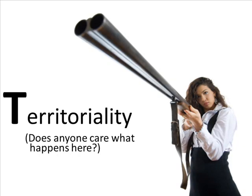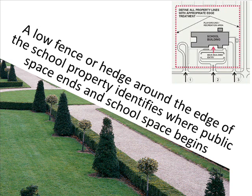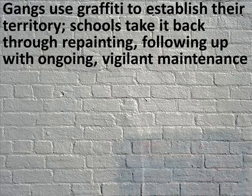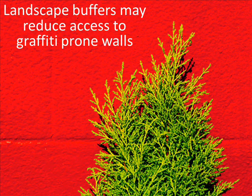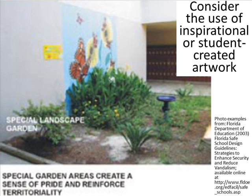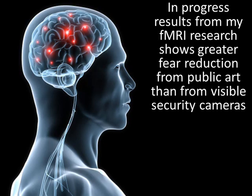And finally, territoriality — does anyone care what happens here? A low fence or hedge around the edge of the school property identifies where public space ends and school space begins, creating a sense of territoriality. Gangs use graffiti to establish their territory; schools take it back through repainting and ongoing vigilant maintenance. Any neglected area will seem like an ideal welcome area for misbehavior. Landscape buffers may reduce access to graffiti-prone walls. Consider inspirational or student-created artwork. In-progress fMRI research shows greater fear reduction from public art than from visible security cameras — a very worthwhile approach.